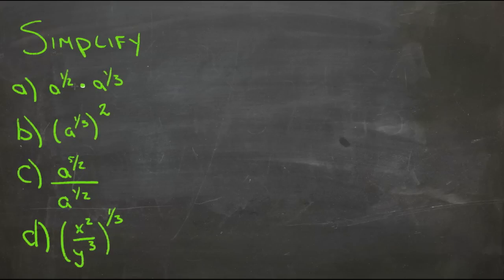So here we have a to the one-half times a to the one-third. We need to add one-half and one-third, so one-half plus one-third. We need to get a common denominator so we'll do them both as sixths. So one-half would be three-sixths and one-third would be two-sixths, so those add together to be five-sixths.